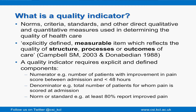A quality indicator has to reflect some aspect of the structure, process or outcomes of care, and it has to have a numerator, a denominator and a norm — meaning we need to know the people we're measuring it in, out of what population, and some sort of standard. This can work for us as a specialty in many ways and it can improve end-of-life care if we use it intelligently.